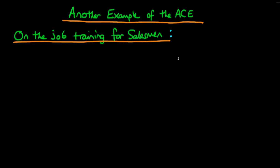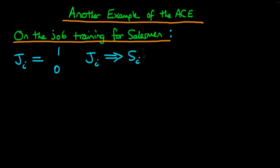In this video I wanted to provide another example of what we mean by the average causal effect. The example I'm going to be talking about is the effect of on-the-job training for salesmen. If you own a firm, what you might be interested in is the causal effect of on-the-job training on the level of sales which a given salesman achieves. We might have a binary variable Ji which represents whether that particular candidate received on-the-job training — equal to one if they did, and zero otherwise. For a manager, the key question is: did that on-the-job training actually cause an increase in sales?